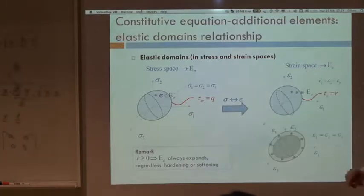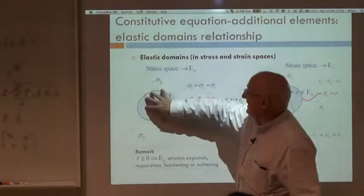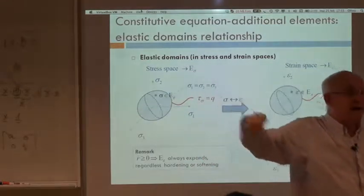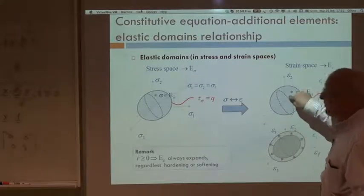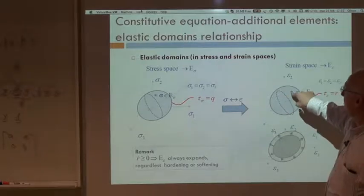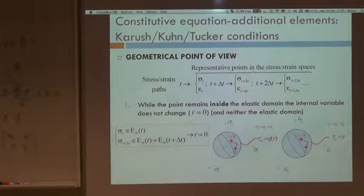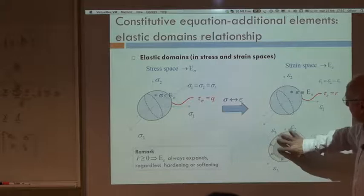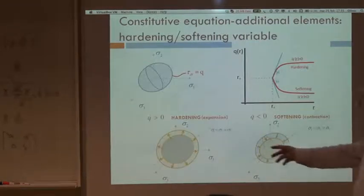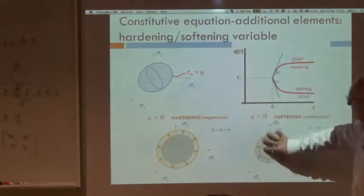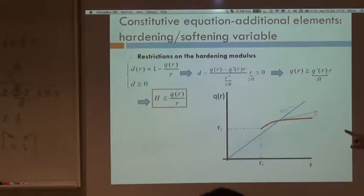In stress space, Q can increase or decrease depending on whether we have hardening or softening. So that volume can expand or can contract and shrink. In the strain space we always have expansion; in the stress space we can have expansion for hardening and contraction for softening — that's the difference.